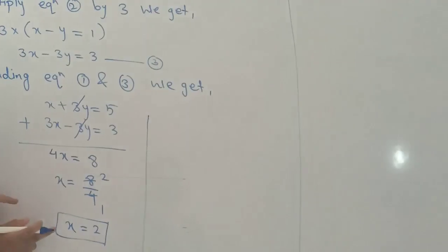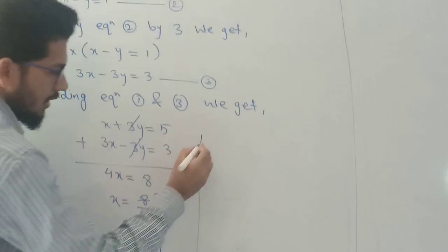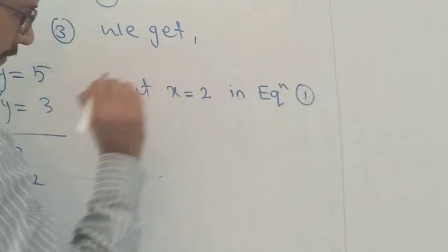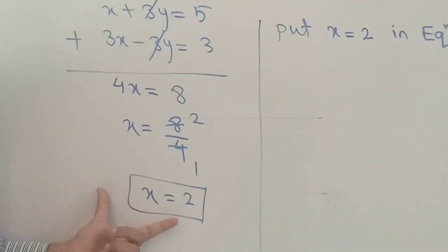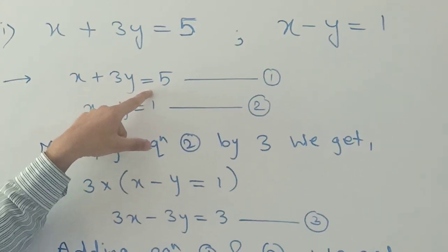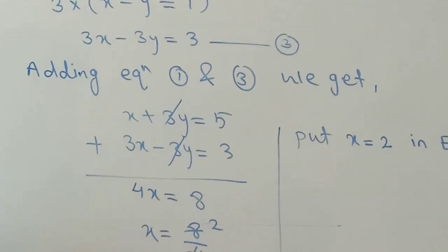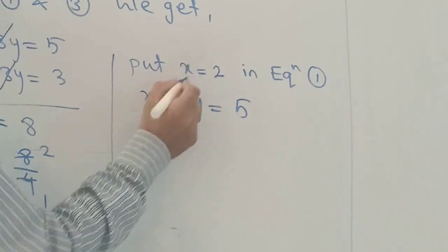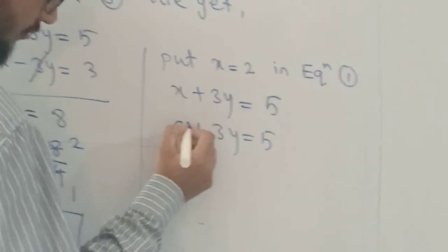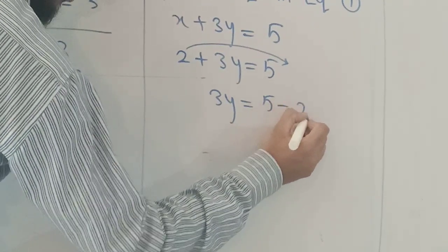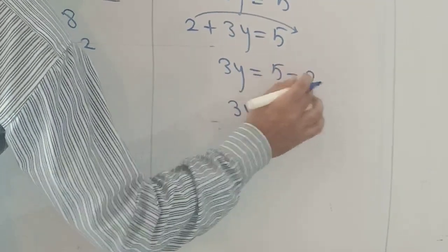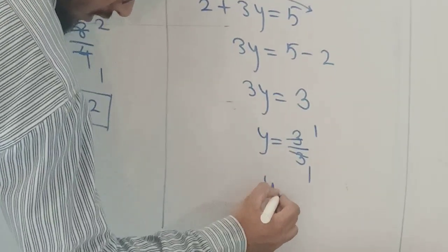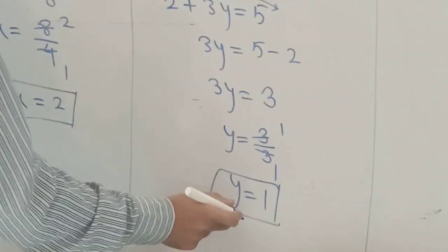We will substitute x equals 2 into equation number 1, which is x plus 3y equals to 5. Replacing x with 2, we get 2 plus 3y equals to 5. Moving 2 to the other side, it becomes minus, so 3y equals 5 minus 2, which is 3. Dividing both sides by 3, y equals 3 divided by 3, which gives y equals 1. So the value of x is 2 and y is 1. This is the answer.